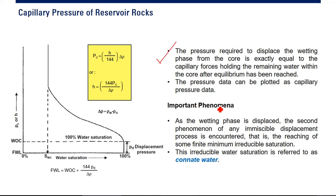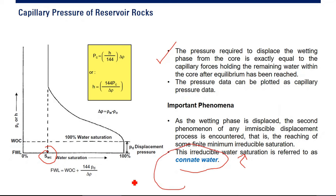If the largest capillary opening is considered circular with radius R, the minimum capillary pressure required is 2 times interfacial tension times cosine of the contact angle divided by R. Any capillary of smaller radius will require a higher pressure. The second important phenomenon is the reaching of some finite irreducible water saturation — called connate water saturation. You cannot push the water more, you cannot reduce the water saturation further, because it is the final irreducible condition.